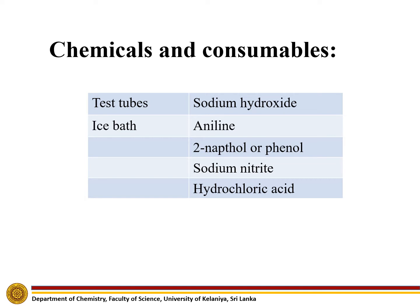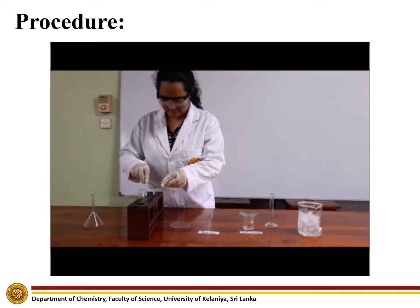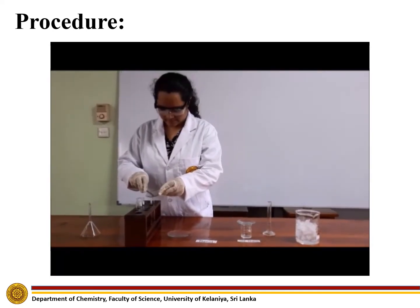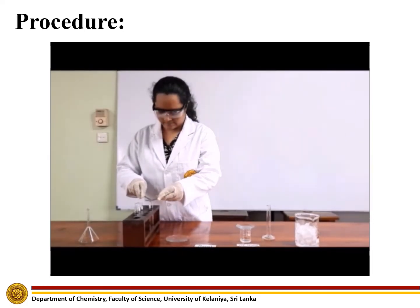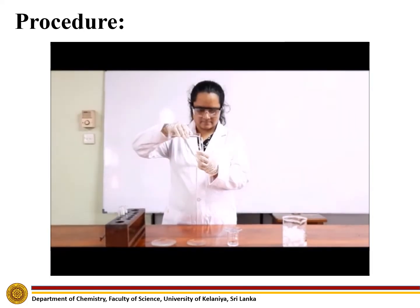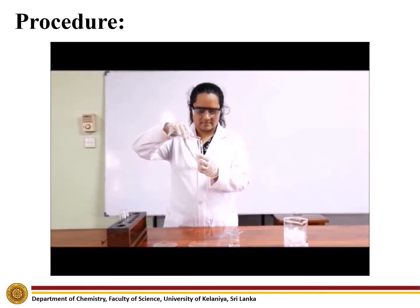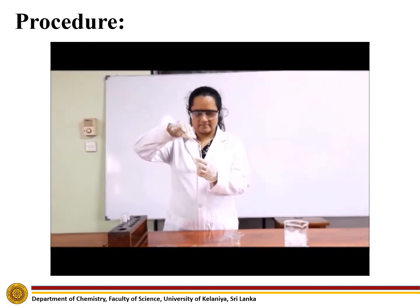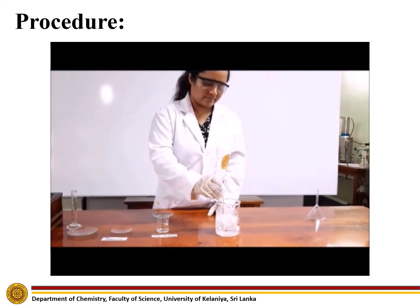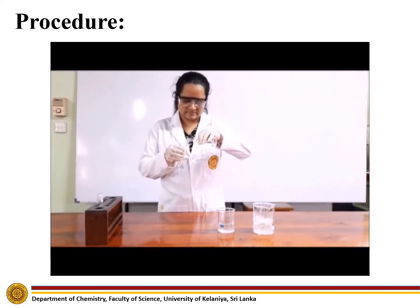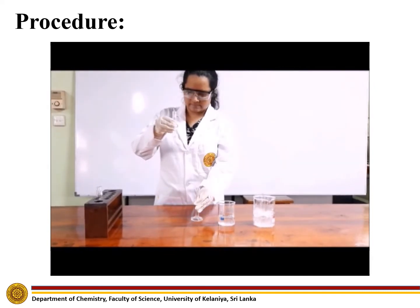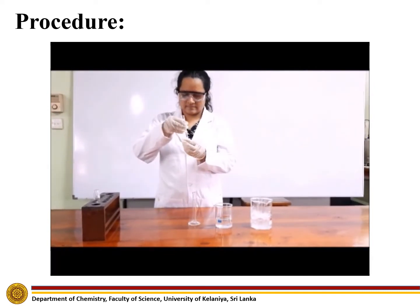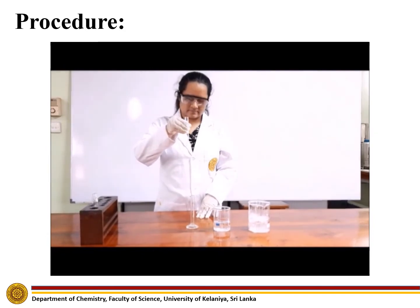Now let us see how this experiment is done. First, dissolve 0.2 grams of phenol in 5 milliliters of 10% sodium hydroxide and cool the solution in an ice bath. Then dissolve 0.2 grams of sodium nitrite in 2 milliliters of distilled water and cool the solution in an ice bath.